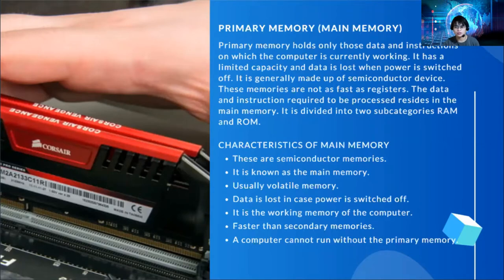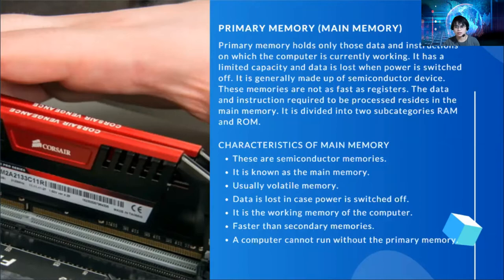What are the different characteristics of primary memory? These are semiconductor memories, also known as the main memory. It is usually volatile memory — when we say volatile, the data stored or the instructions will get lost when the power is switched off. It is the working memory of the computer. The computer will not run without a primary memory, and it is faster than the secondary memories.